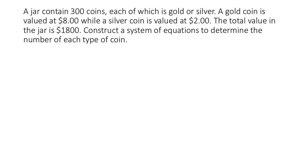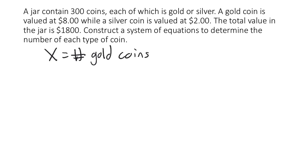In this problem, we're told that we have a jar containing 300 coins, each of which is either gold or silver. Gold coins have a value of $8 while silver coins have a value of $2, and we know that the total value of the jar is $1,800. Our goal is to set up a system that will let us determine how many of each coin we have. Since we care about the number of each type, we'll define x as the number of gold coins and y as the number of silver coins.